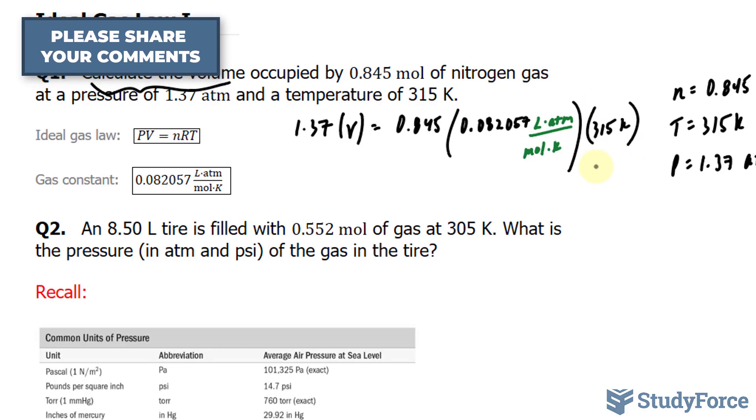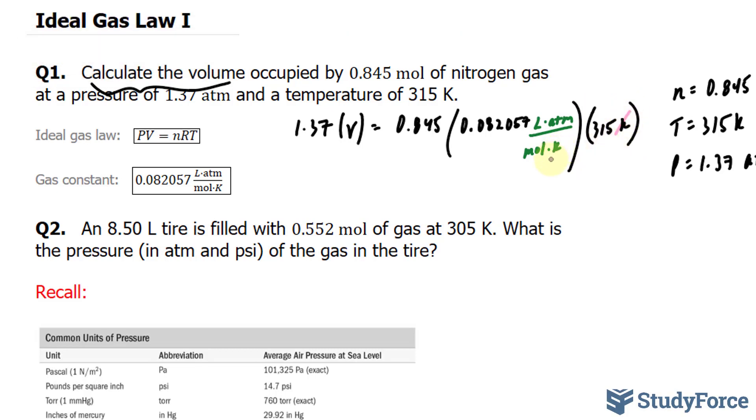So right from the get-go, the Kelvin units will cancel out. And since this number is in moles, which I didn't write but I can show you, will cancel out with this mole unit. We're looking for the volume, so I have to divide both sides by 1.37 atmosphere.